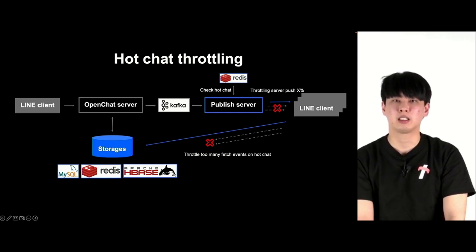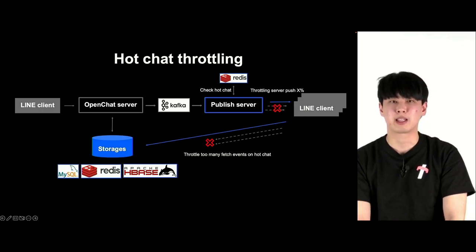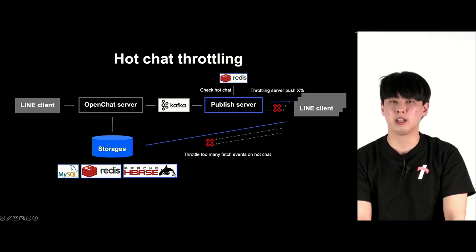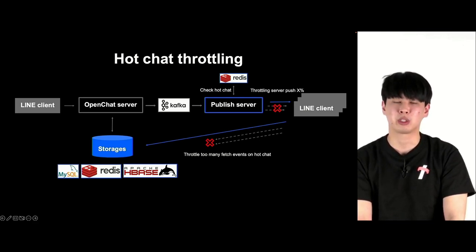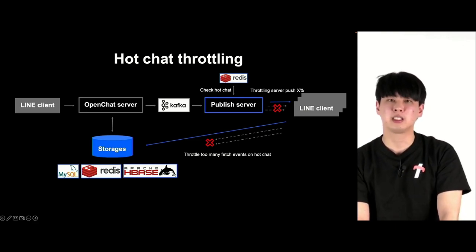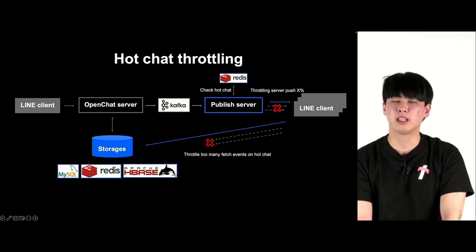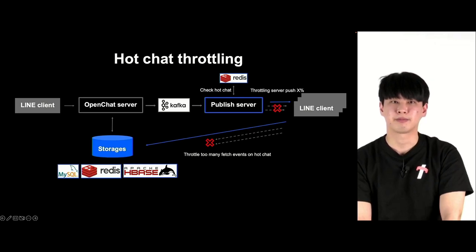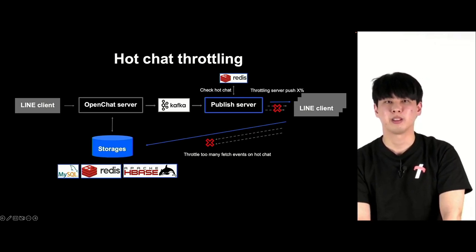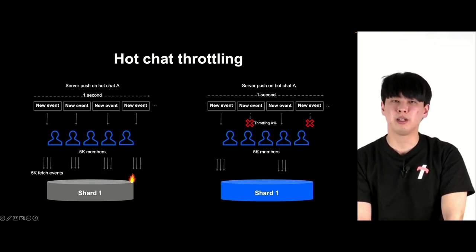Before sending the event generation message in the server push, we first confirm whether the chat is a hot chat in Redis. If it is a hot chat, we throttle it and control it so that it does not make fetch event requests. This allows us to target only the hot chats.